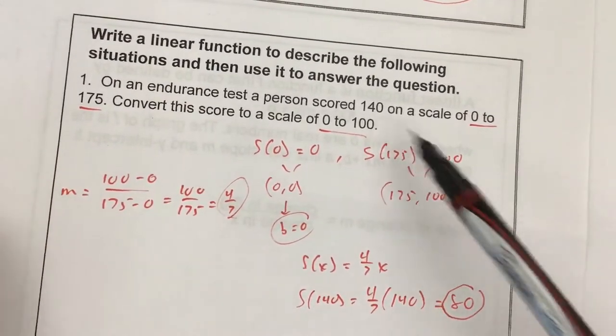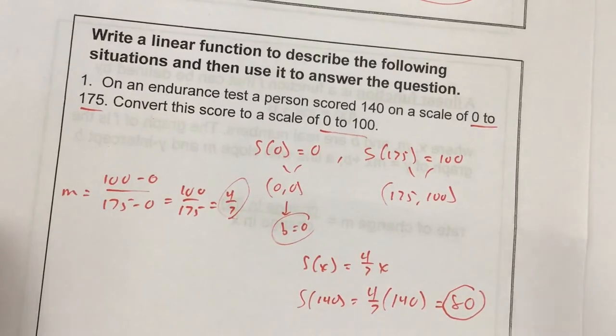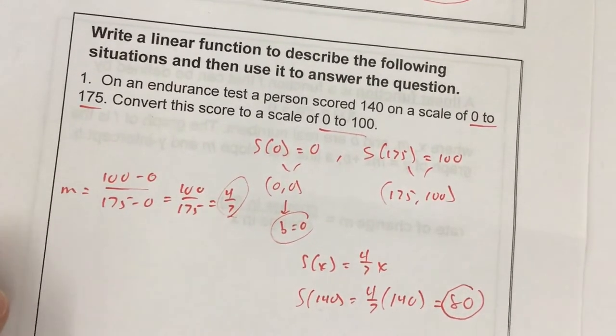Now, you would have said, okay, I could just take a 140 out of 175. Well, that's because we kept the first numbers at 0. That could change in a different problem.